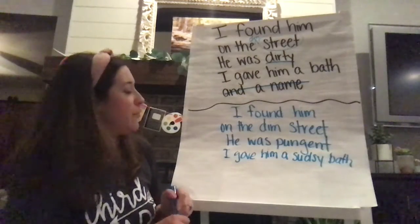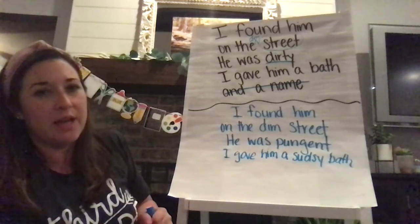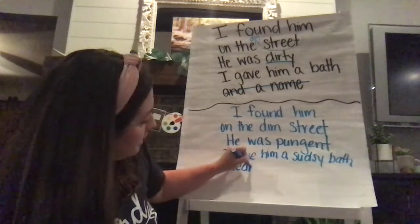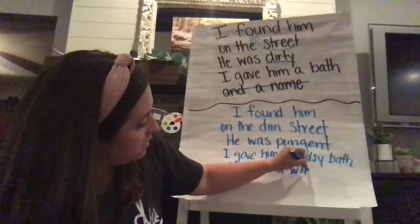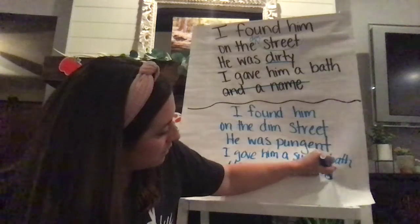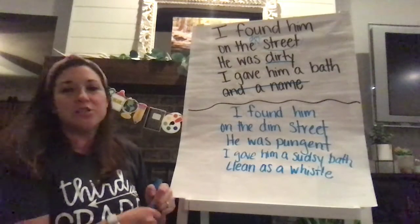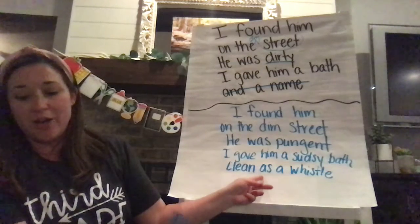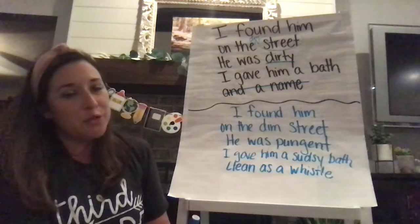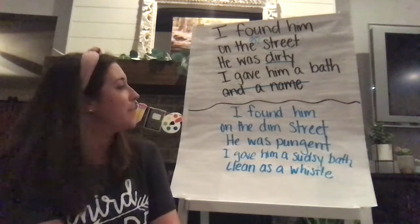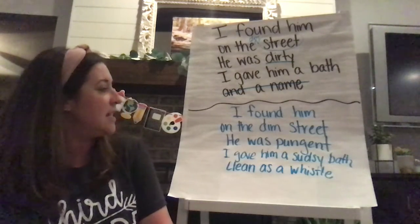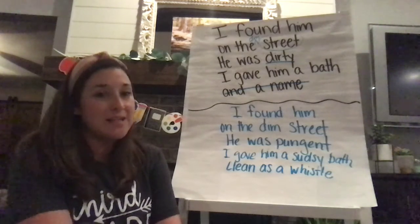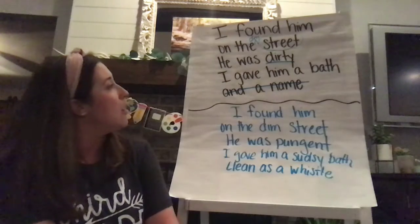Now that I know about similes and metaphors, I want to keep going with how clean he was. So I'm going to say clean as a whistle — that's going to describe that he was super, very clean, and I used the word as, so here I used a simile. Let me reread you the poem: I found him on the dim street. He was pungent. I gave him a sudsy bath. Clean as a whistle. I think I did a better job adding imagery to my writing, and I'm pretty proud of it.